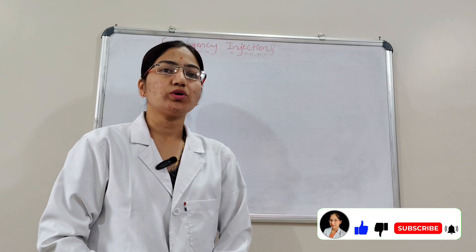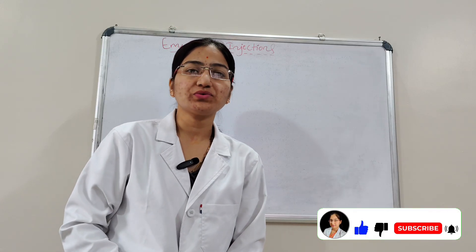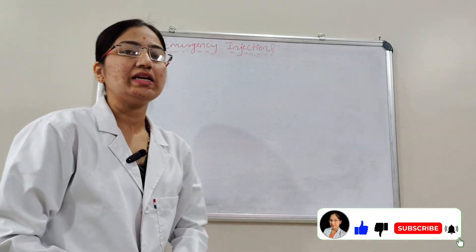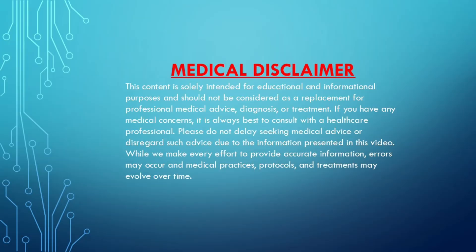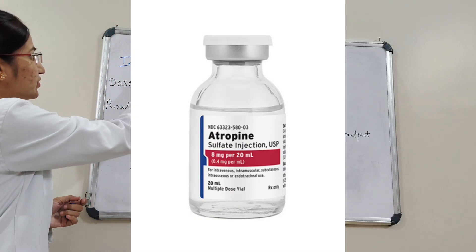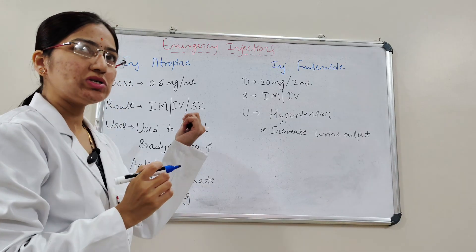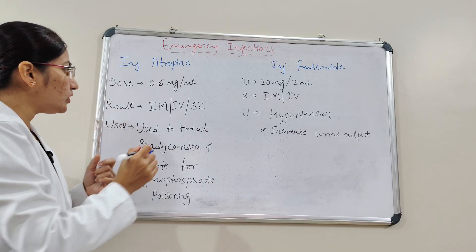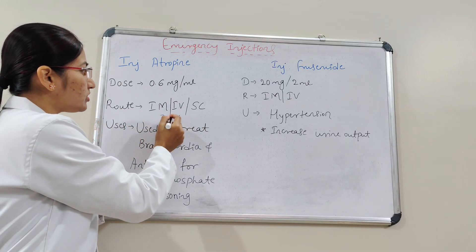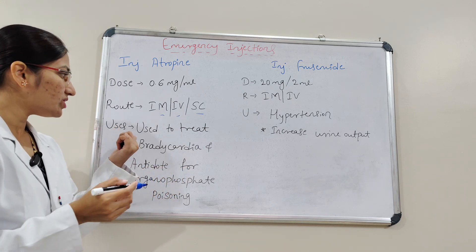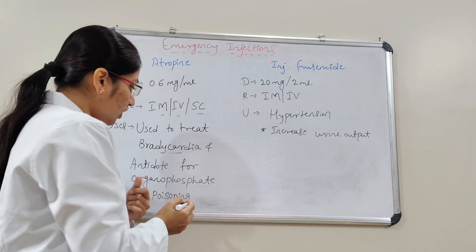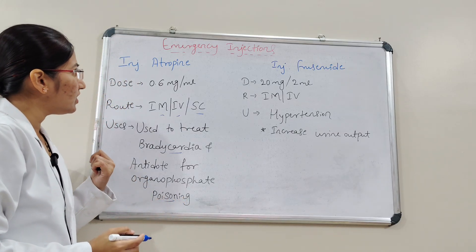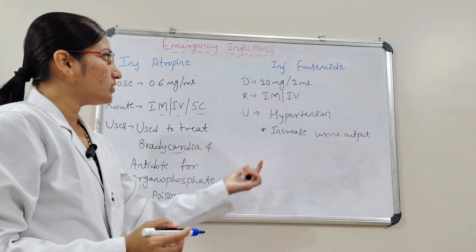Hello, welcome back to our Fire Nursing Tutorial YouTube channel. In this class we will discuss emergency injection medications. The first injection is Atropine. The dose is 0.6 mg per ml, routes are intramuscular, intravenous, and subcutaneous. It is used to treat bradycardia and also as an antidote for organophosphate poisoning.